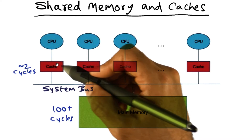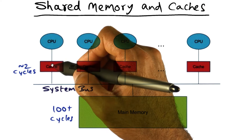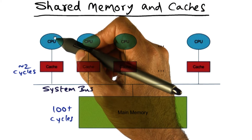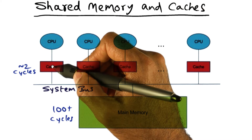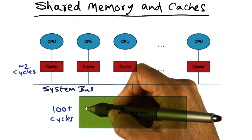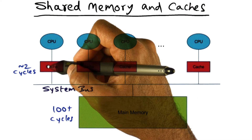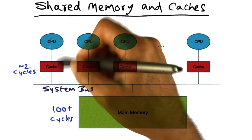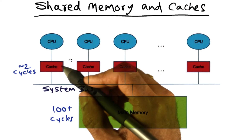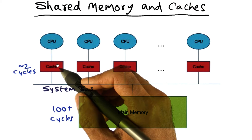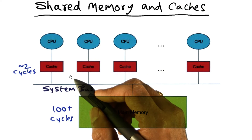If the CPU goes to main memory and pulls in some data, it sits in the cache. So when the CPU is looking for something, it first looks in the cache. If it's not there, it goes to main memory, fetches the data, and puts it into the cache so that in the future the CPU doesn't have to go to main memory. That's the purpose of the cache — the same in both uniprocessors and multiprocessors.